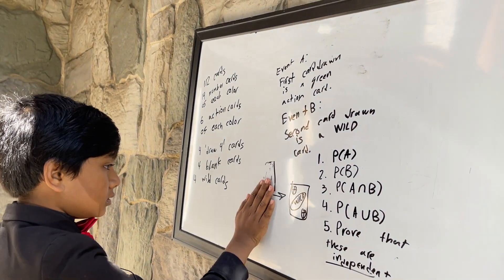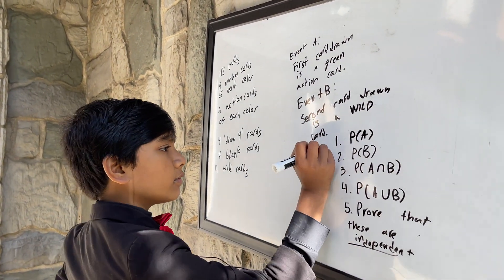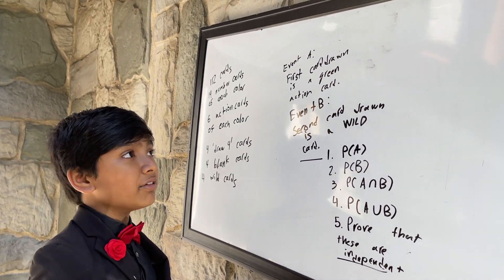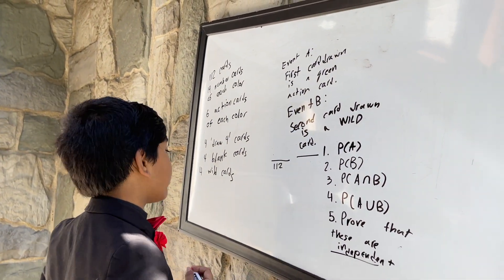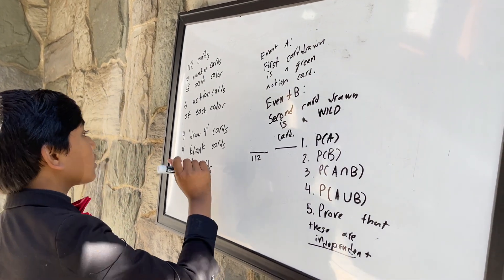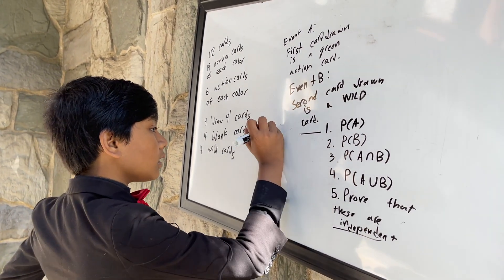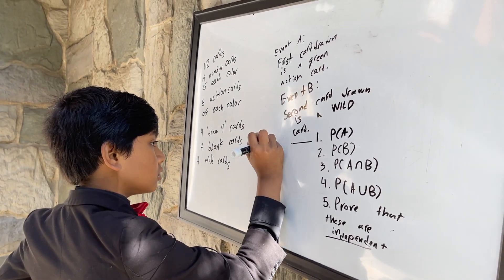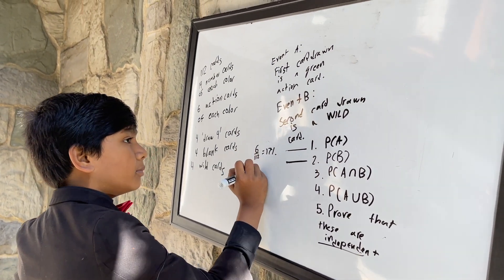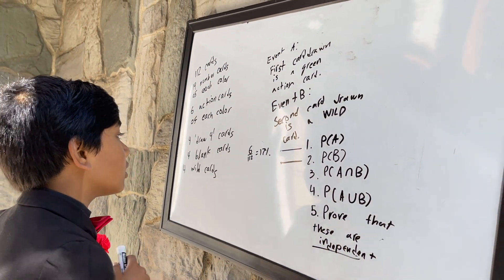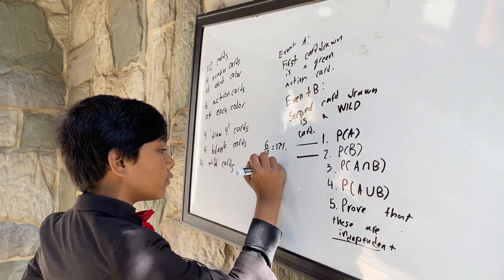Alright, here's our problem. P of A: if that's your first card drawn, there are 112 possibilities and there are six action cards of each color, so six out of 112, which is also about 17%. P of B: the second card drawn is a wild card, and there are four wild cards. Since it's our second card drawn, that would be four out of 111.